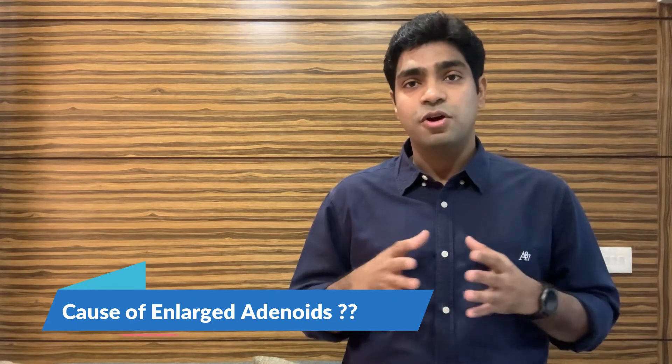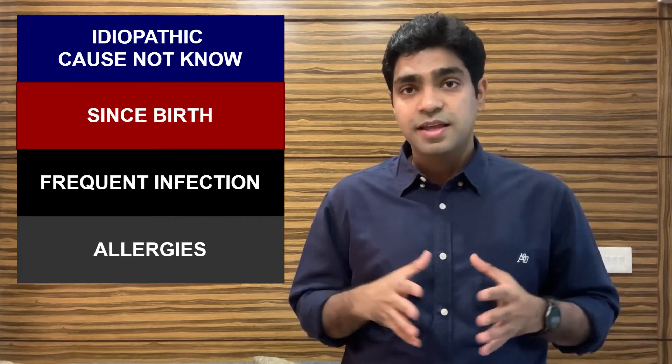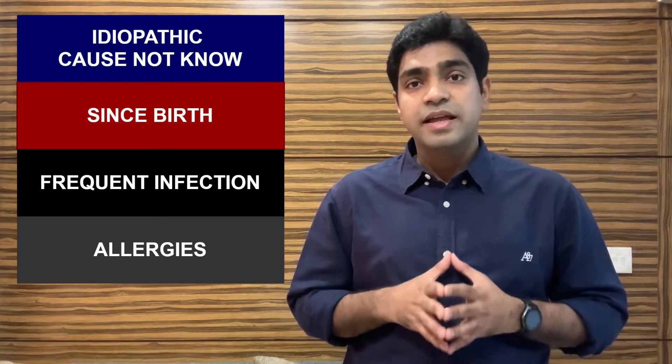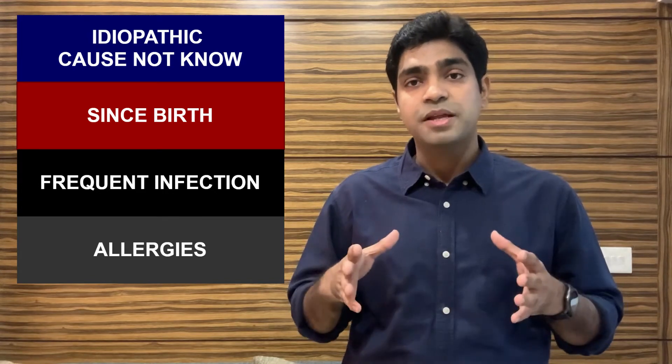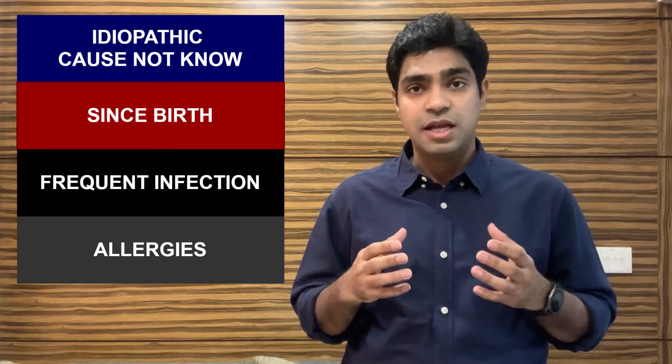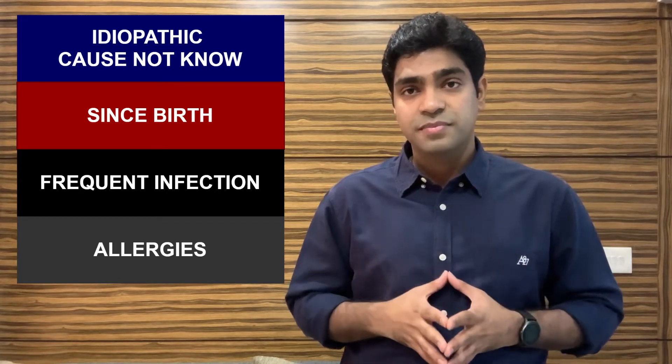It has been found that few children within the age group of one to five years generally tend to have enlarged adenoids. The first and foremost reason, which is most common, is idiopathic — meaning the cause is not known. Medical science has not been able to establish the reason why some children have enlarged adenoids since birth.